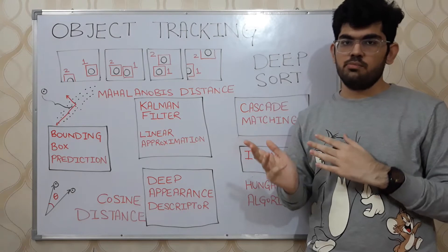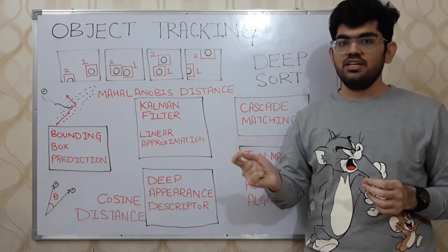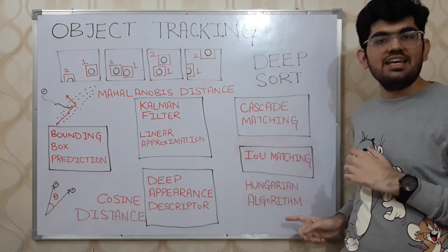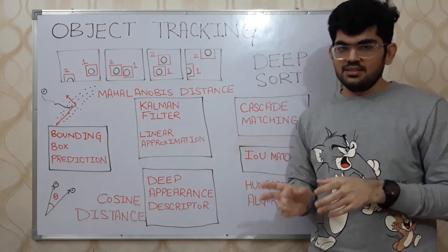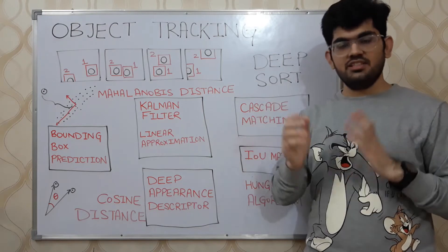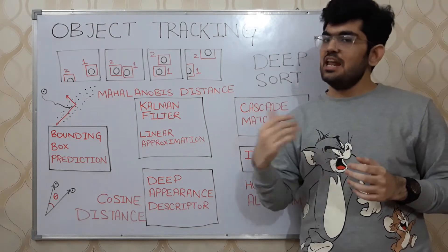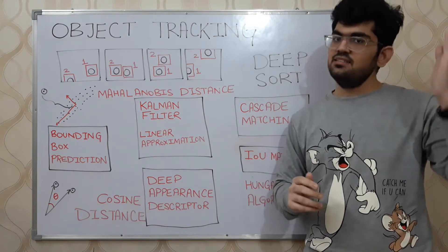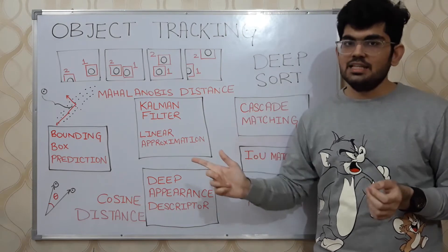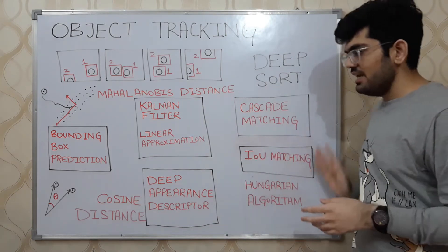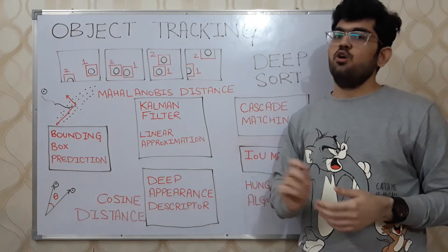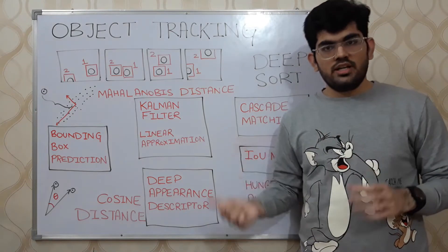Solving this assignment problem using a brute force approach takes O(N!) complexity, which is very large. To solve this, the sort algorithm uses the Hungarian algorithm, which solves this linear assignment problem in O(N³) complexity — a great improvement. Once we have assigned N predictions to N IDs, we have solved the tracking problem for the i-th frame. We then run this algorithm again in a loop to keep track of objects in the next frame. This is how the simple sort algorithm works.